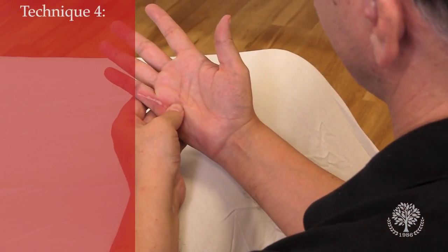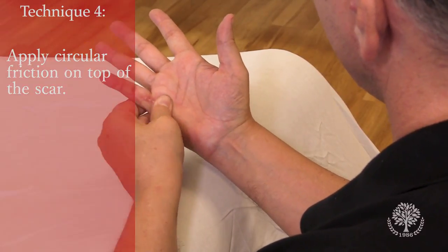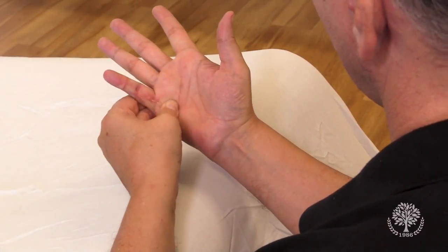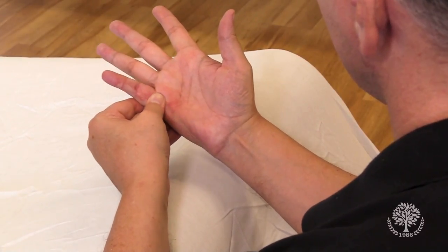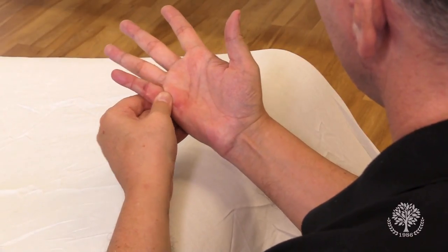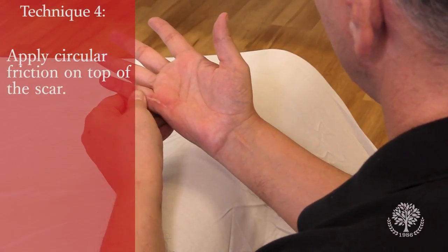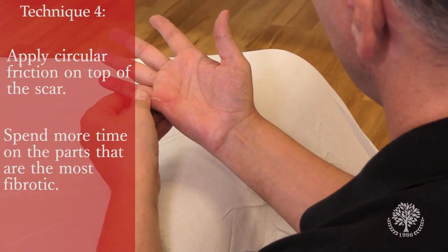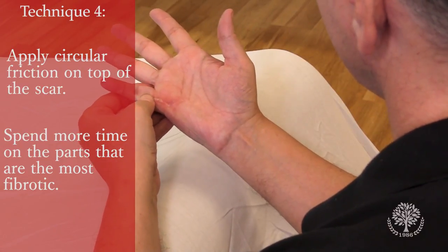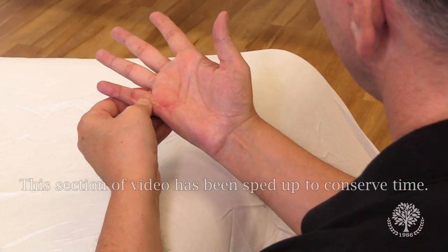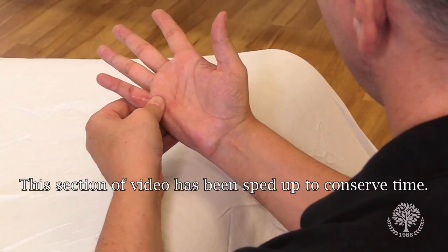The next technique that I'm going to use is circular friction on top of the scar. I'll spend more time on the areas that are the most fibrotic, which is right here at the joint.